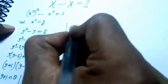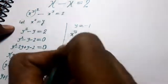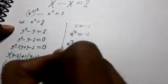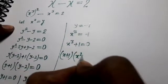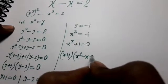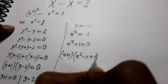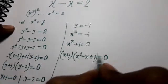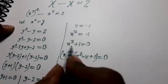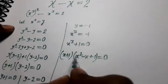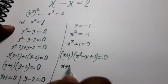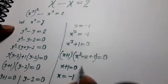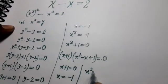For y equal to negative 1: since y equals x cube, we have x cube equal to minus 1, so x cube plus 1 equal to 0. This can be factorized further using the sum of cubes formula a cubed plus b cubed equals (a plus b)(a squared minus ab plus b squared), giving (x plus 1)(x squared minus x plus 1) equal to 0. So x plus 1 equal to 0 gives x equal to minus 1.